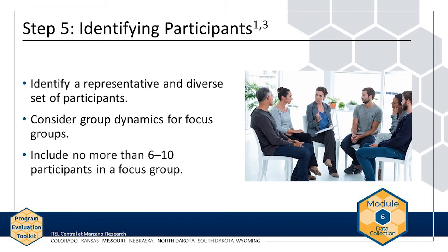Thoughtfully identifying participants for interviews and focus groups is an important step. Choose a representative set of participants who can provide you with detailed information related to your questions. Participants from different racial and ethnic backgrounds, positions, locales, and socioeconomic levels will provide multiple perspectives when answering questions. For the AMP evaluation question about barriers to completing homework, the evaluation team wants to talk with students in different middle school grades, from different socioeconomic backgrounds, and at different performance levels. Conducting multiple interviews or focus groups can help you investigate areas of consensus and difference across participants.